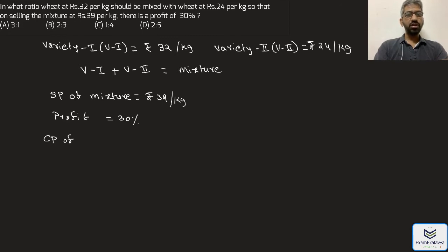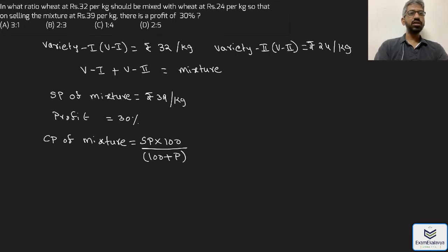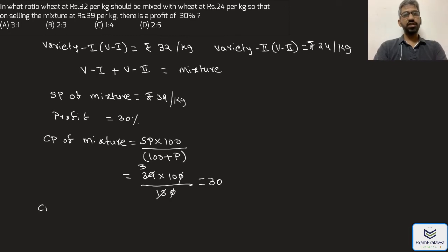Cost price of the mixture equals selling price multiplied by 100 divided by (100 plus profit). That is 39 multiplied by 100 divided by 130. The zeros cancel and 13 cancels three times, so the cost price of the mixture equals 30 rupees per kg.